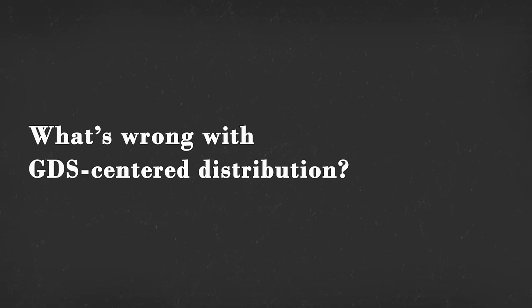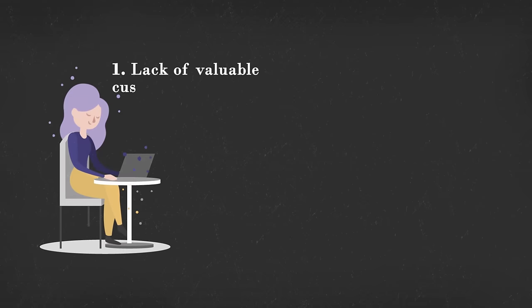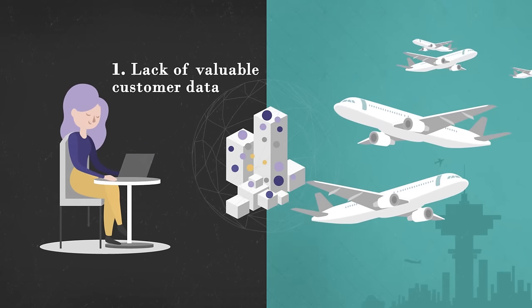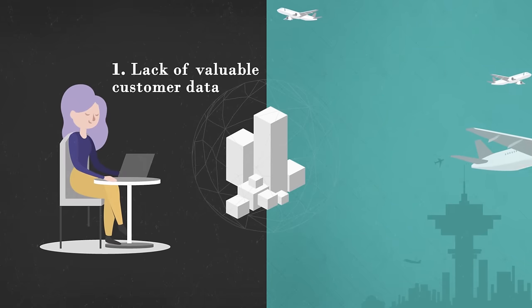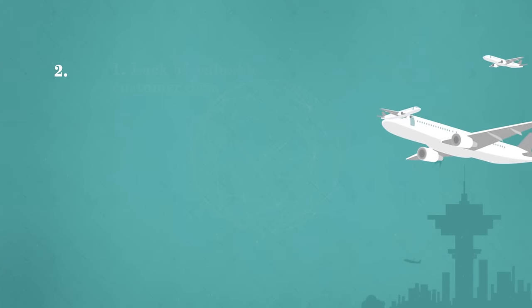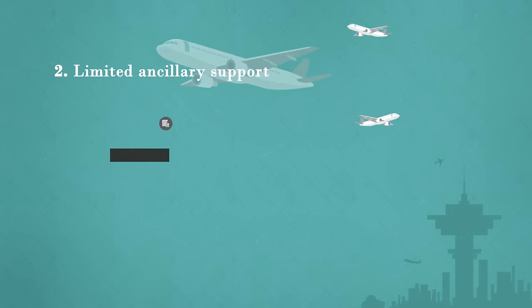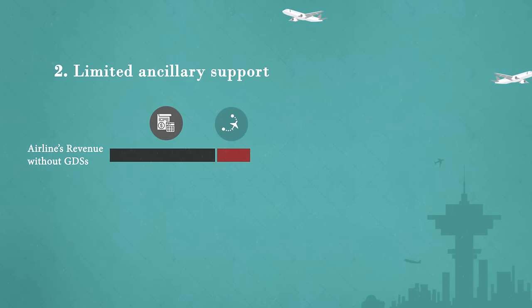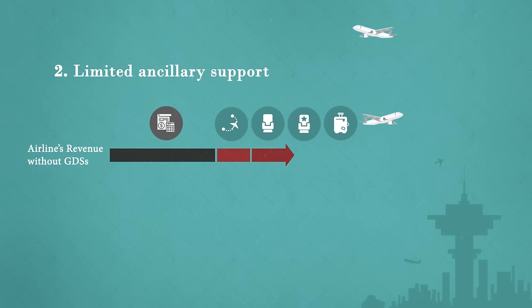What's wrong with GDS-centered distribution? The first problem is the lack of valuable customer data. As GDSs process bookings, most of the information remains in the hands of middlemen, and doesn't allow airlines to track their customers and eventually adapt to their preferences. Second, limited ancillary support. Airlines receive very thin margins in the sale of their core services — carrying people from point A to point B. The main source of profit for many airlines is allowing you to choose seats, upgrade a class, take more luggage, get priority boarding, or order a better meal.